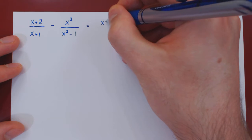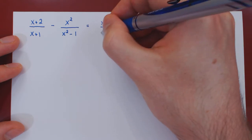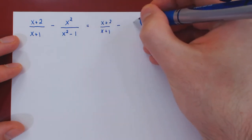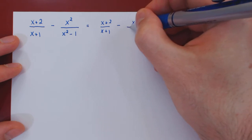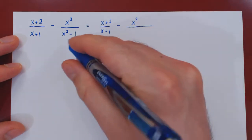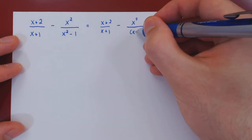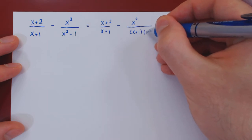So we have x plus 2 over x plus 1 minus x squared over, and we're going to factor the x squared minus 1, as we've just said, x plus 1 times x minus 1.